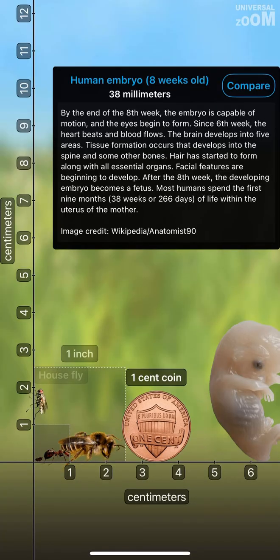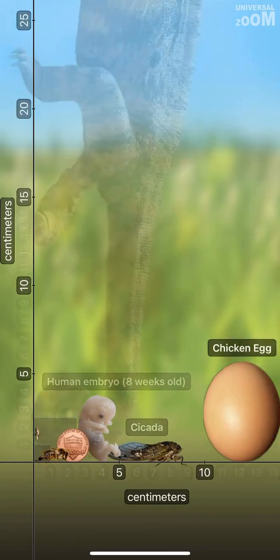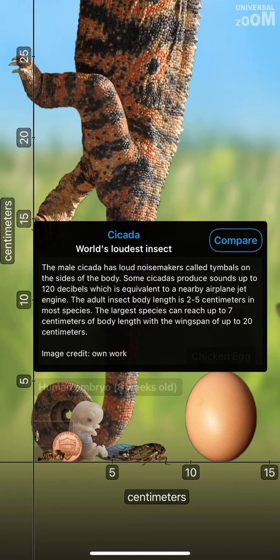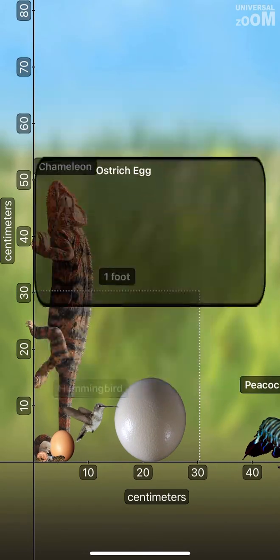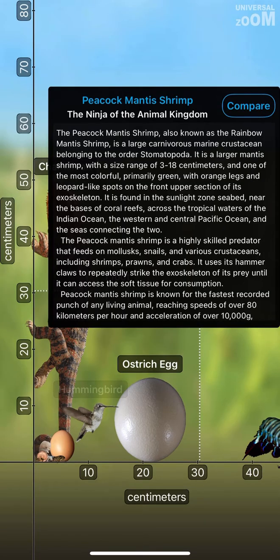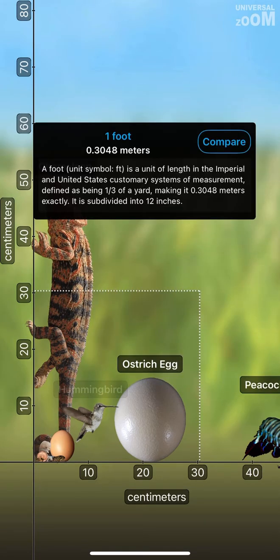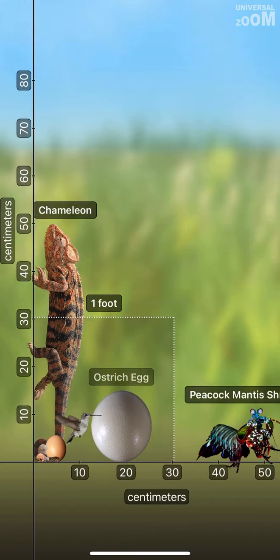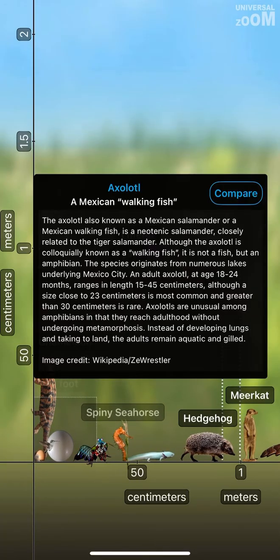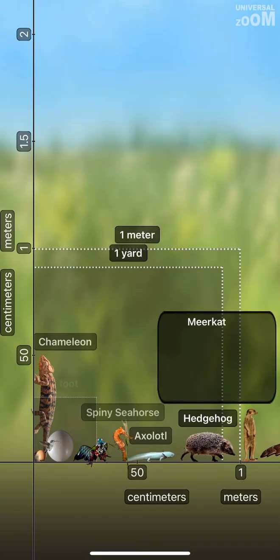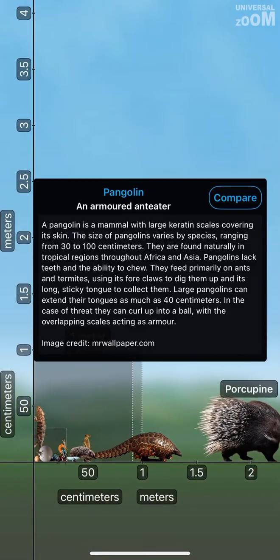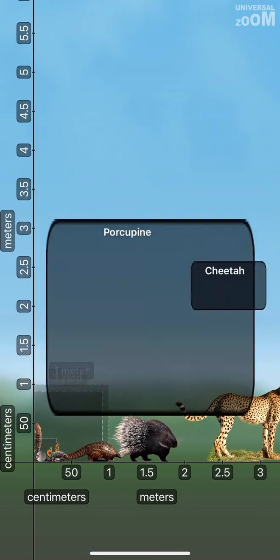Human Embryo 8 Weeks Old. Cicada, Chicken Egg. Hummingbird, Ostrich Egg, Peacock Mantis Shrimp. 1 Foot. Chameleon, Axolotl, Spiny Seahorse, Hedgehog, Meerkat.